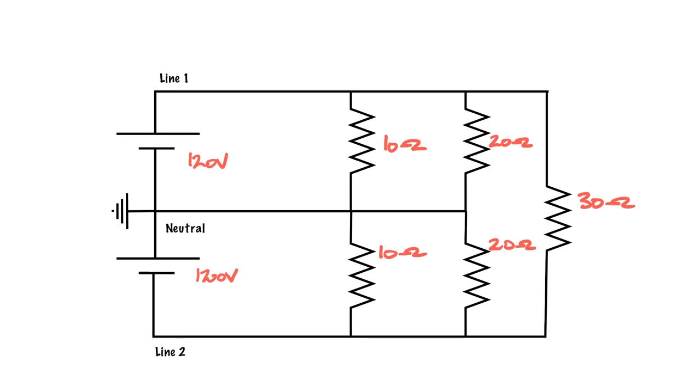Using Ohm's law, I know that 120 volts divided by 10 ohms gives me 12 amps, and 120 volts divided by 20 ohms gives me 6 amps. So this is going to be 12 amps and this is going to be 6 amps. Down here it's the same values - 12 amps and 6 amps.